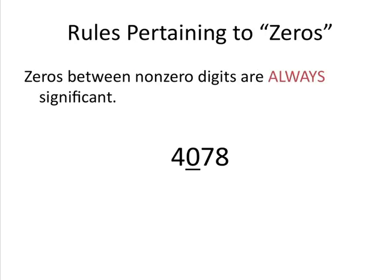If non-zero digits are always significant, that must mean that zeros may or may not be significant. So let's talk about some rules pertaining to zeros. The first is that any zeros between non-zero digits are always significant.